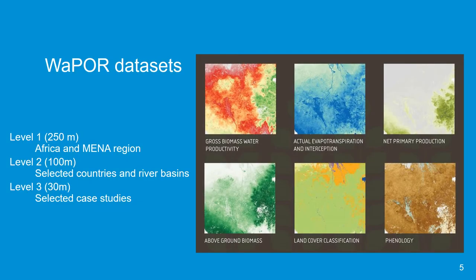The WAPOR database contains three levels with different spatial and temporal resolution. Level 1 at 250 meter resolution is available for the African continent and the Middle East region. Level 2 data at 100 meter resolution is available for selected countries and river basins. Finally, Level 3 data is available for selected areas with more detailed information including a crop map. At all levels, data is available at decadal, monthly and annual time steps.